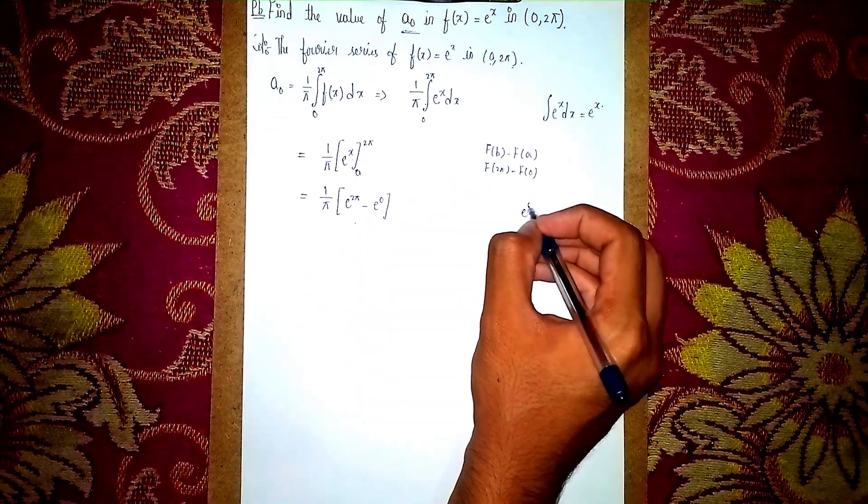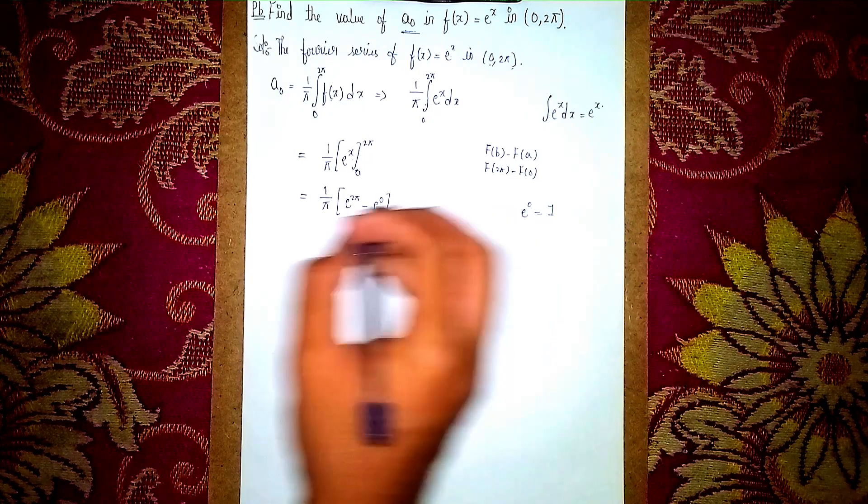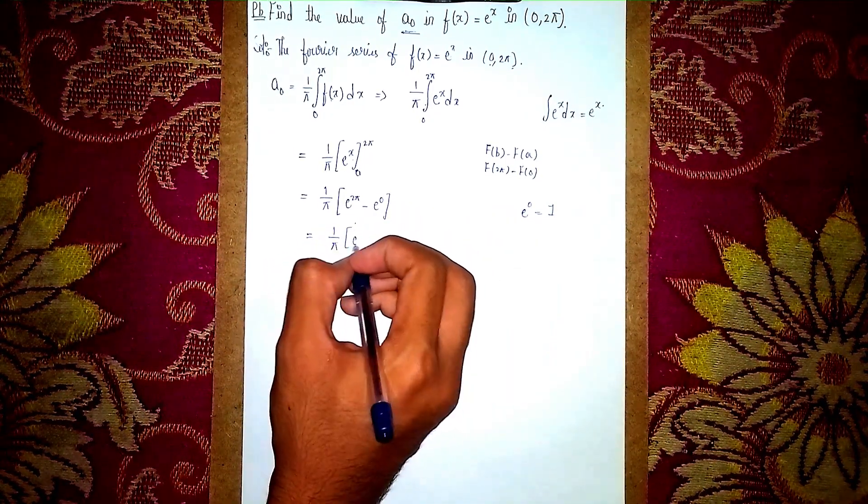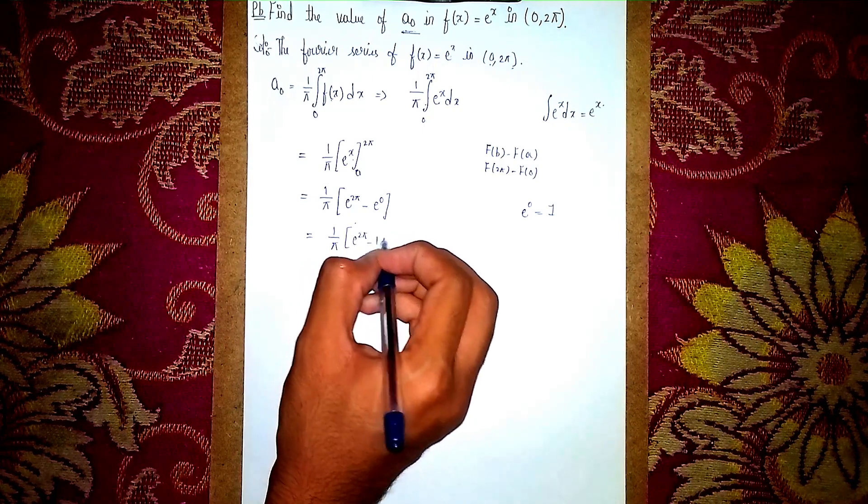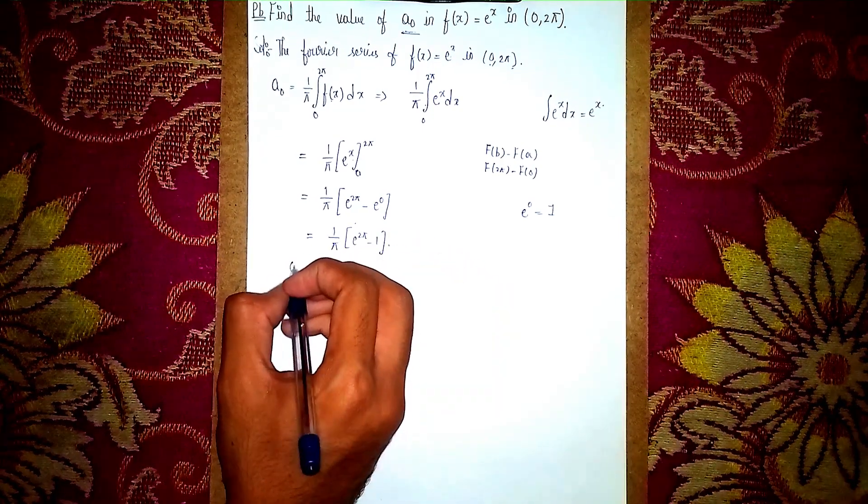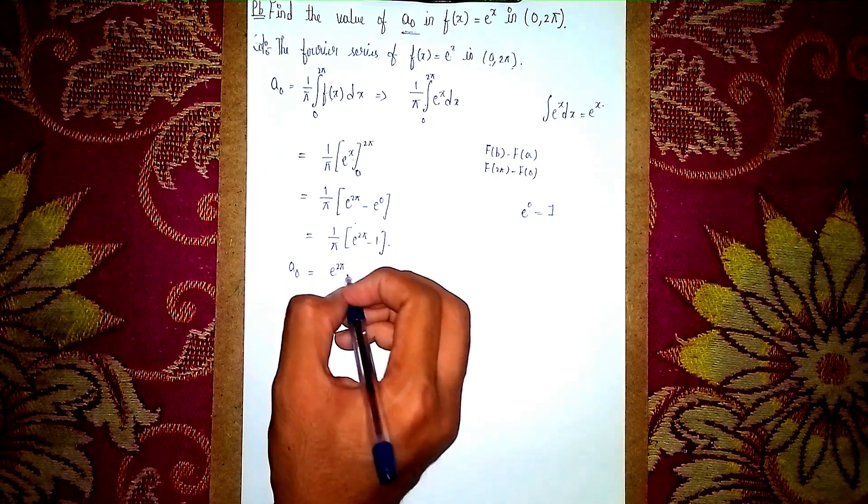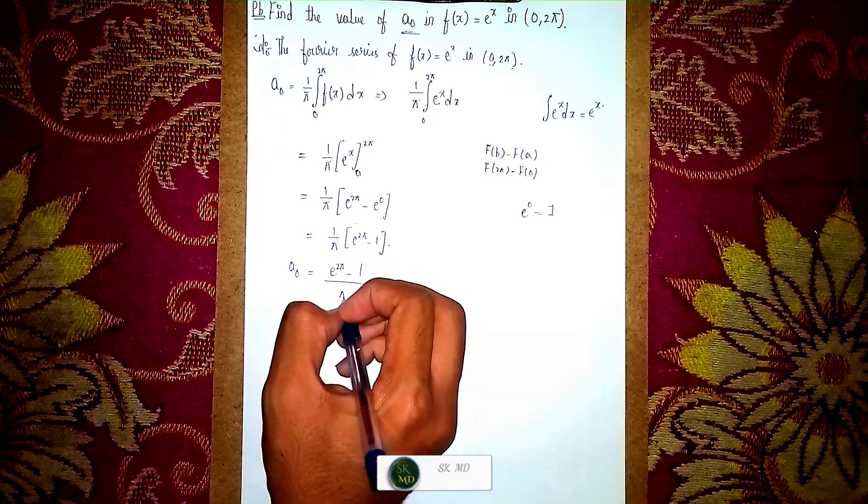e^0 = 1, so it becomes (1/π)(e^(2π) - 1). Our a₀ value is (e^(2π) - 1)/π. This is our a₀ value.